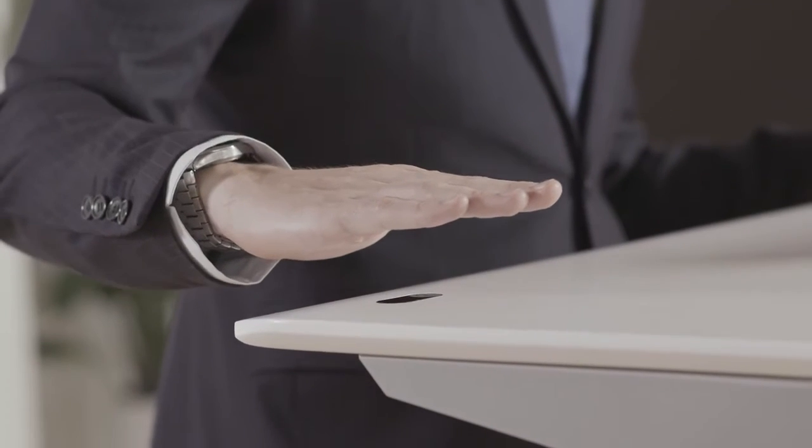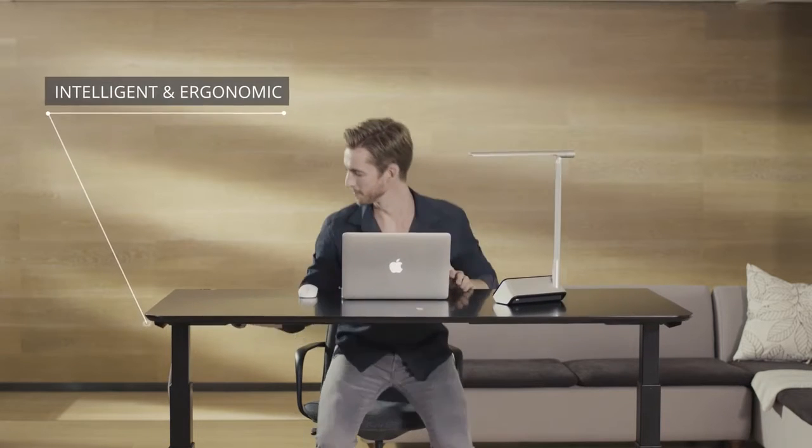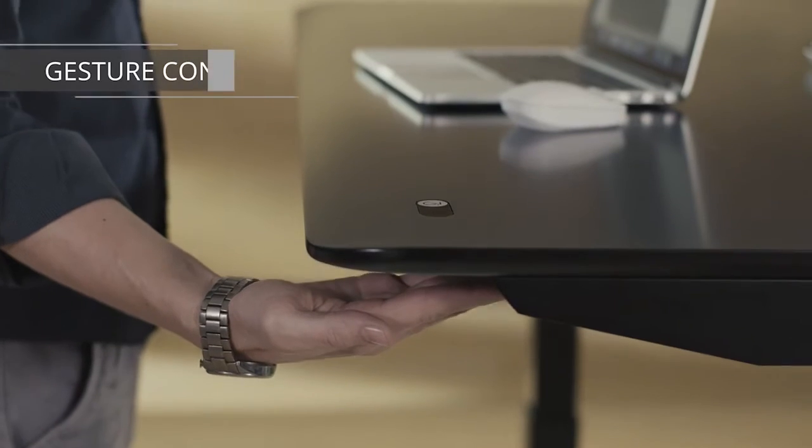What if there is a desk controlled by magic, changing the way you work, boosting your productivity and helping you reach your full potential? Introducing a completely new workplace solution: the 37 Degree Magic Desk is not only the first gesture control height adjustable smart desk, but also packed with additional smart features.